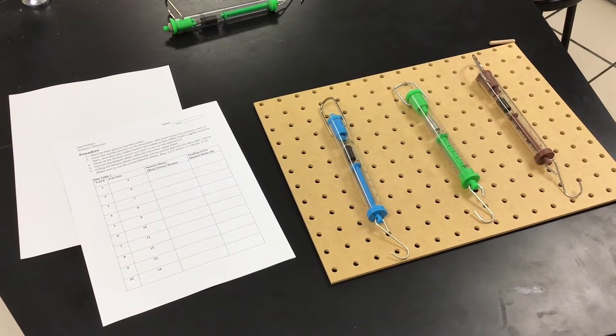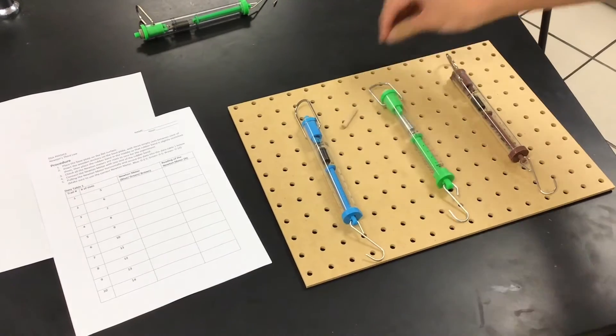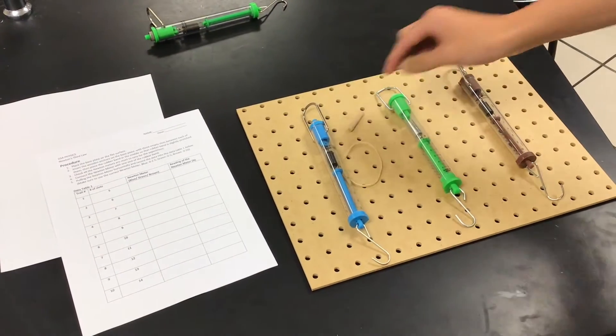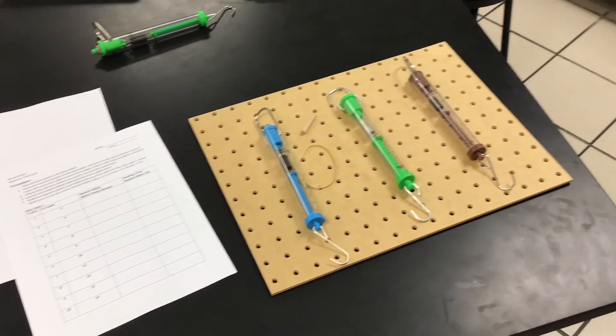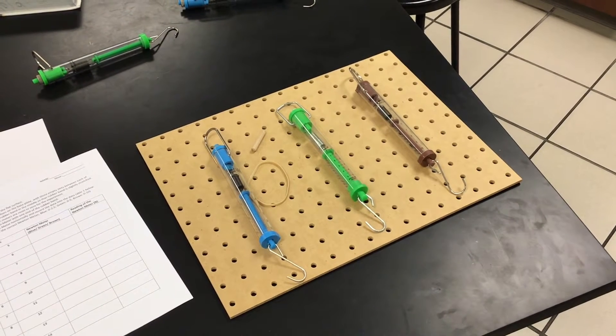Here's the equipment we need to use: the brown base plate, the anchor, and rubber band. As you can see on the base plate, there are three different Newton meters from blue to green to brown.